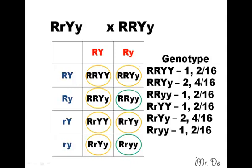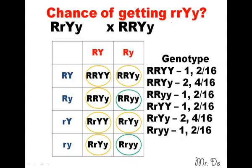We verify with the full dihybrid cross — which takes 5 to 10 minutes — and confirm: there is no chance of getting that trait. So the multiplication rule is much faster than doing the whole dihybrid cross. All you have to do is isolate, turn it into a monohybrid cross for the same alleles, figure out the probability, and then multiply. Simple as that.